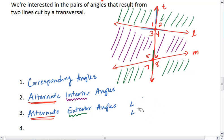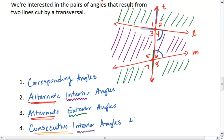In our last pair, we have consecutive interior angles. Consecutive means that we are on the same side of the transversal, and interior tells us that we are back in between lines L and M. For example, angle 4 and angle 6 are examples of consecutive interior angles. Can you find the other pair of consecutive interior angles? Hopefully you said angle 3 and angle 5.